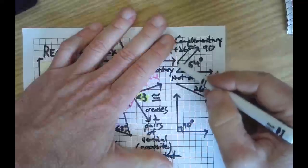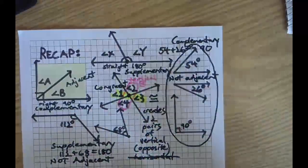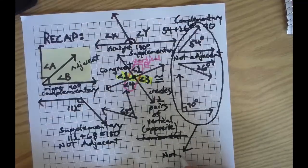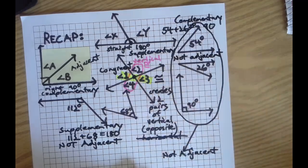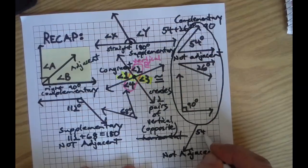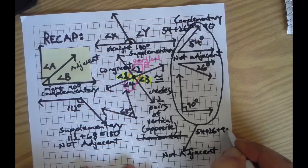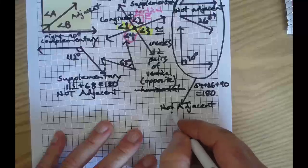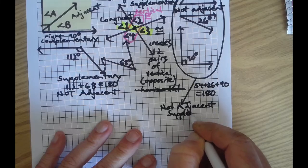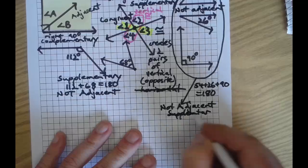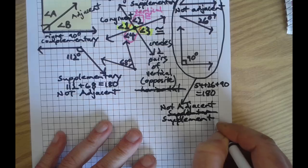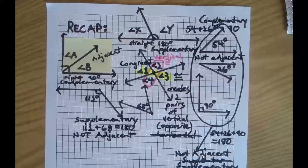What if we take all three of these angles? What would you say about them then? Well, in addition to none of them are adjacent, what else could you say? What is their sum? We've got 54 plus 26 plus 90. You could say they are supplementary in addition to being non-adjacent. That's our recap. Six minutes.